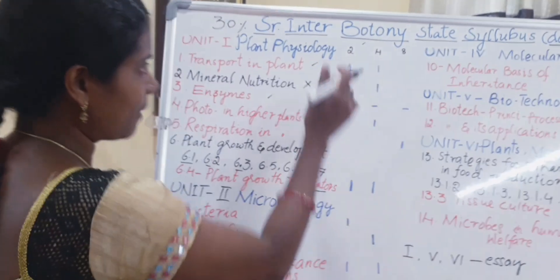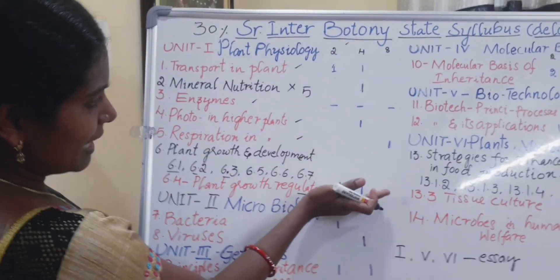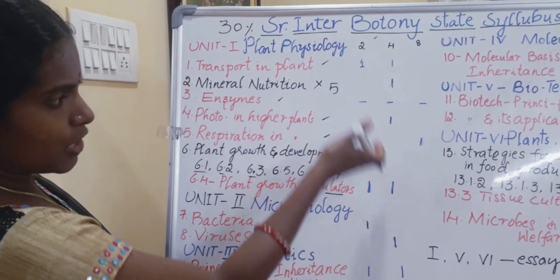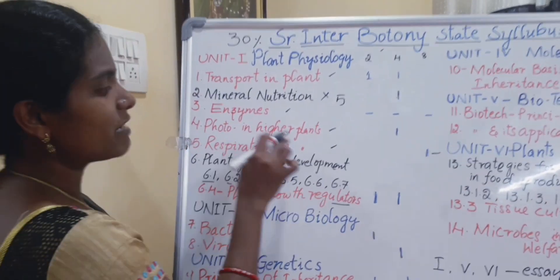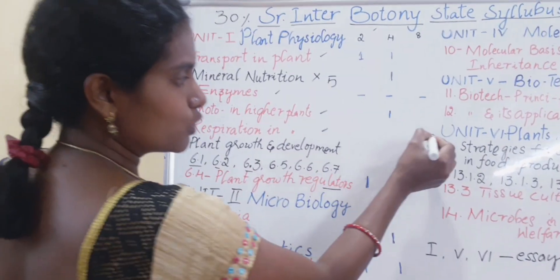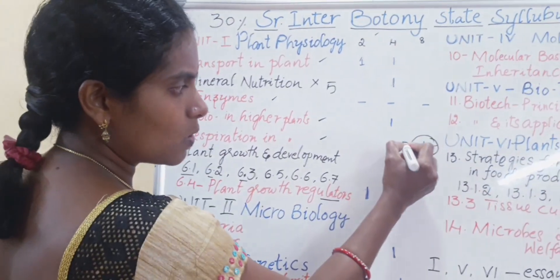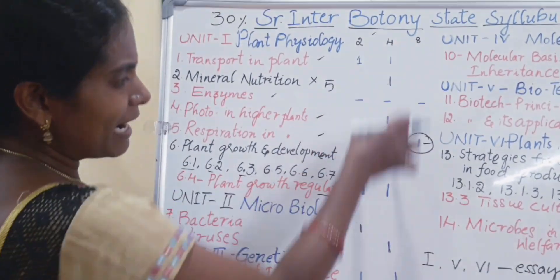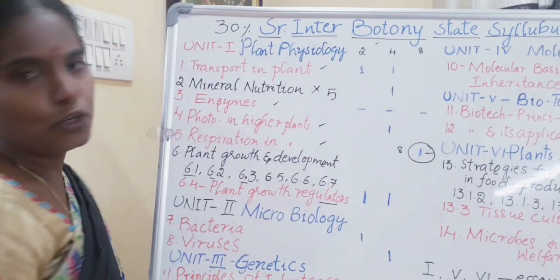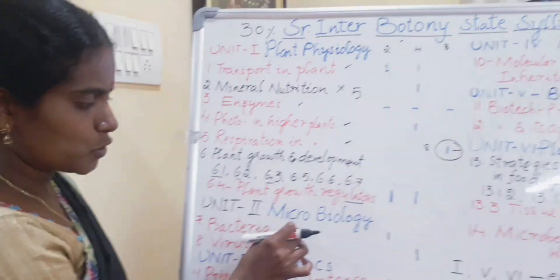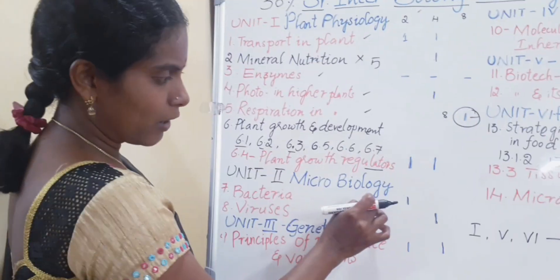From the entire first unit, only one essay question is coming, from Respiration in Plants. You should concentrate on Respiration in Plants — eight marks. From the remaining chapters, four marks and two marks questions apply. Now let us enter into the second unit, Microbiology, which is the study of microorganisms.